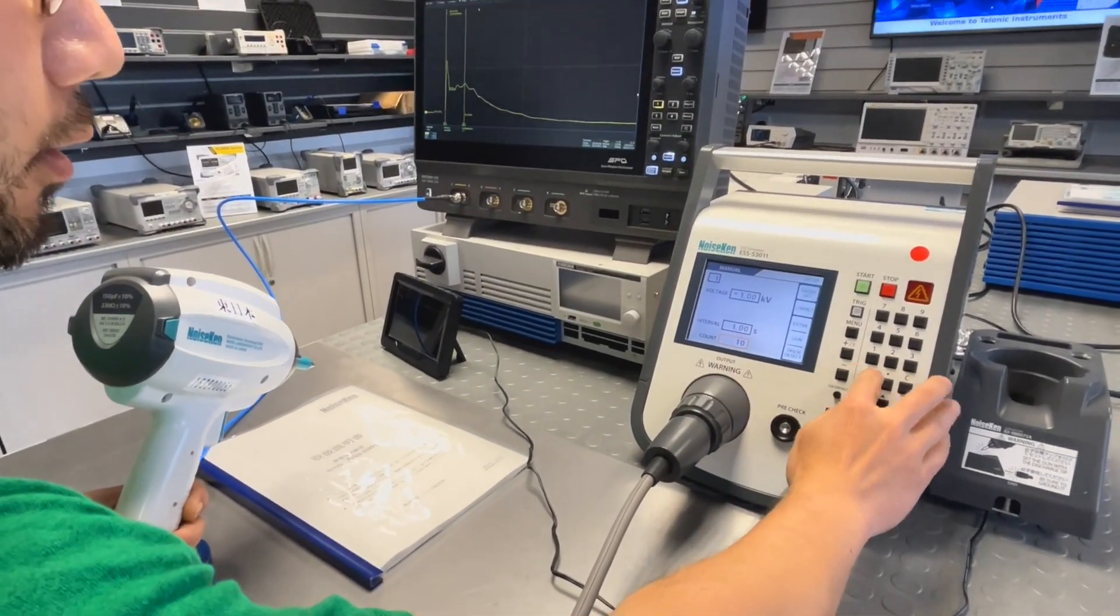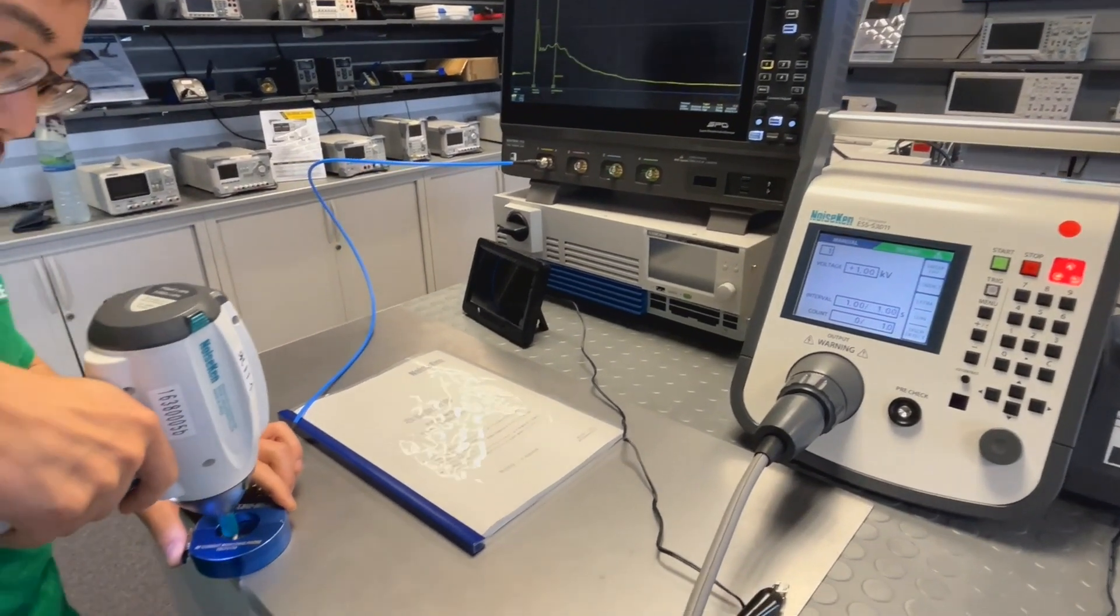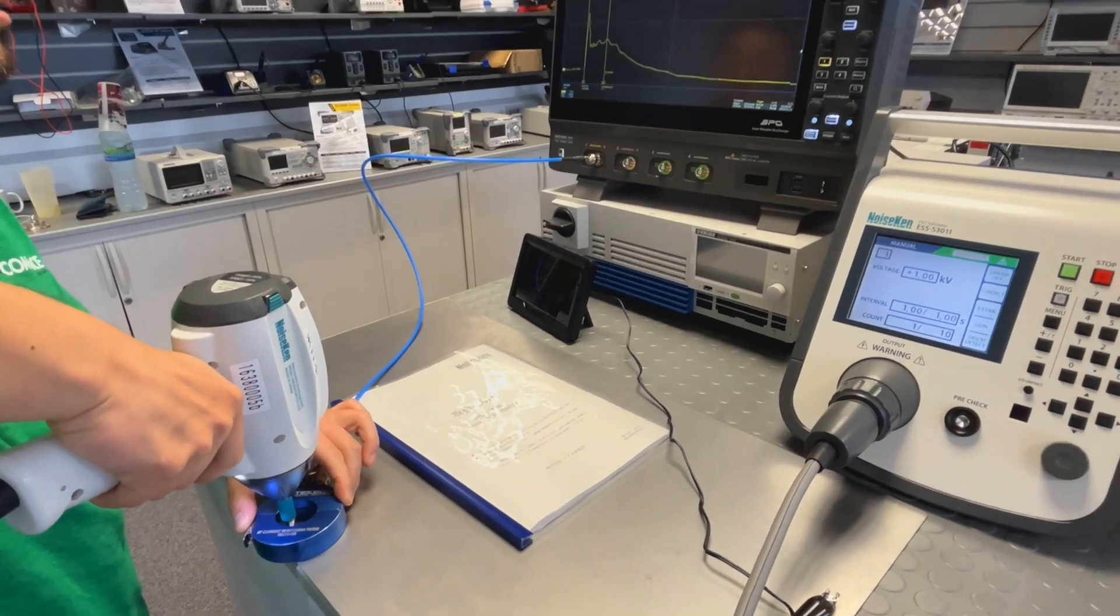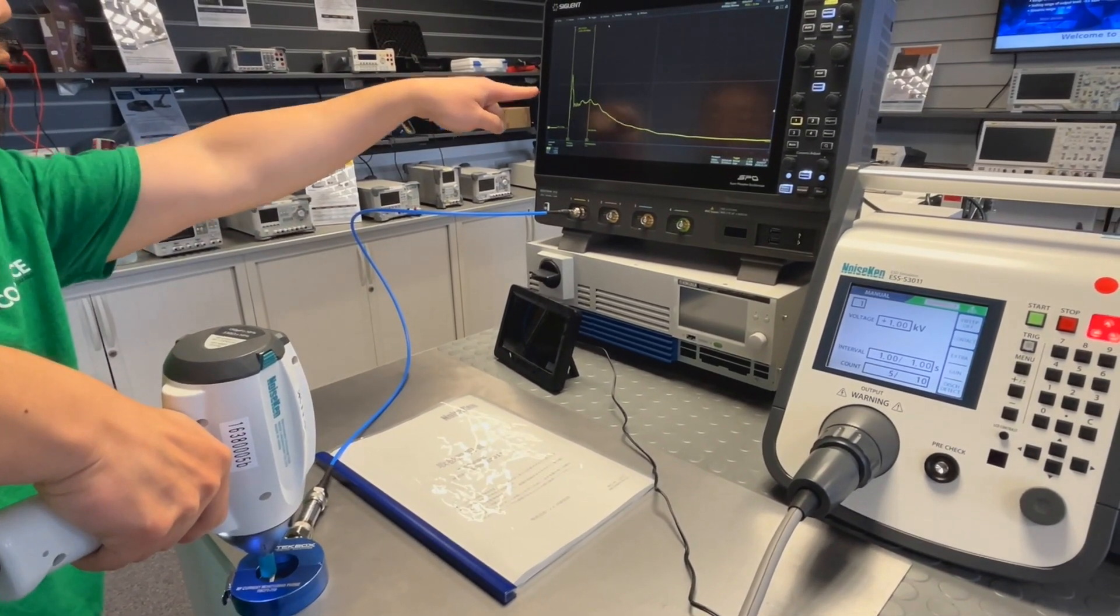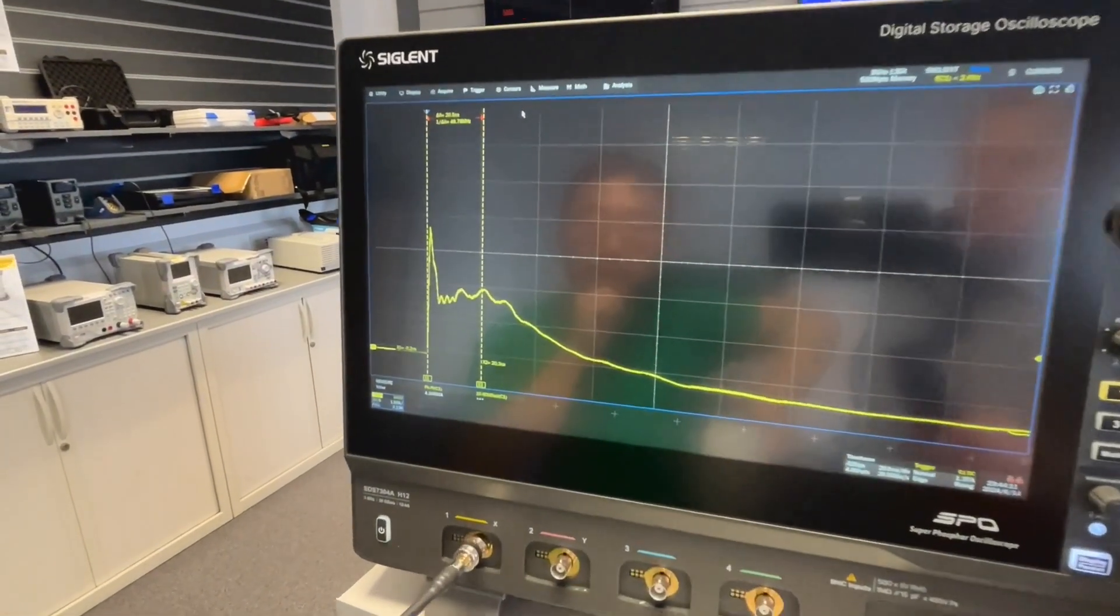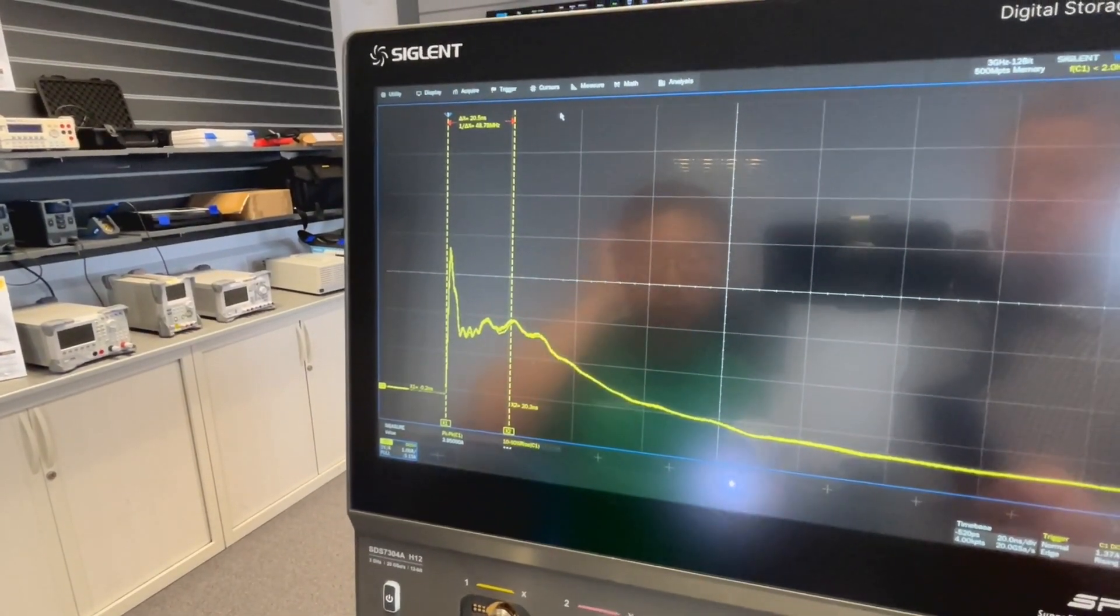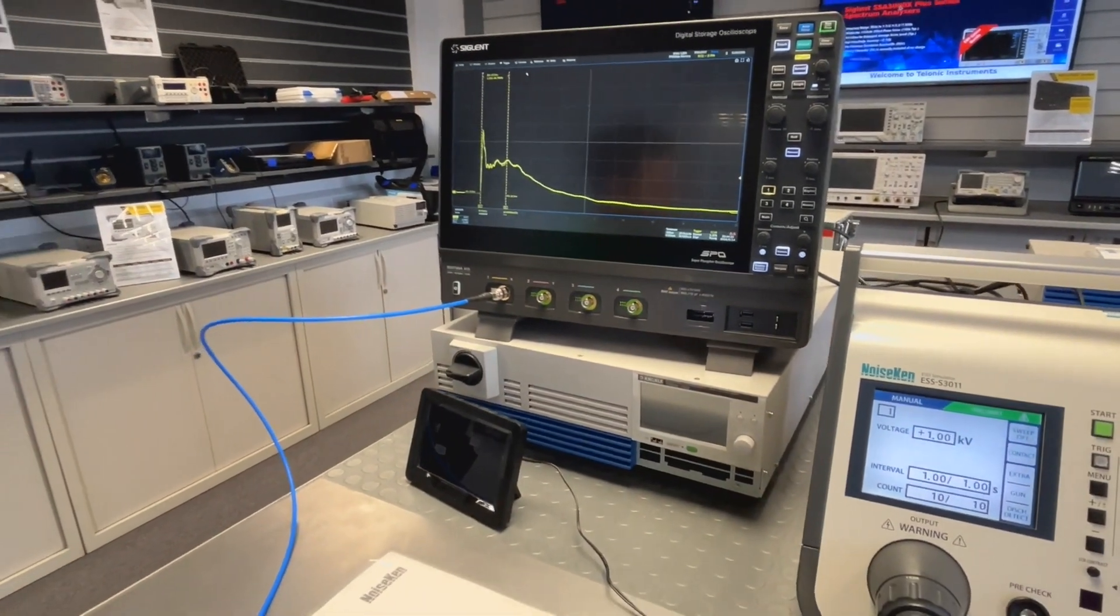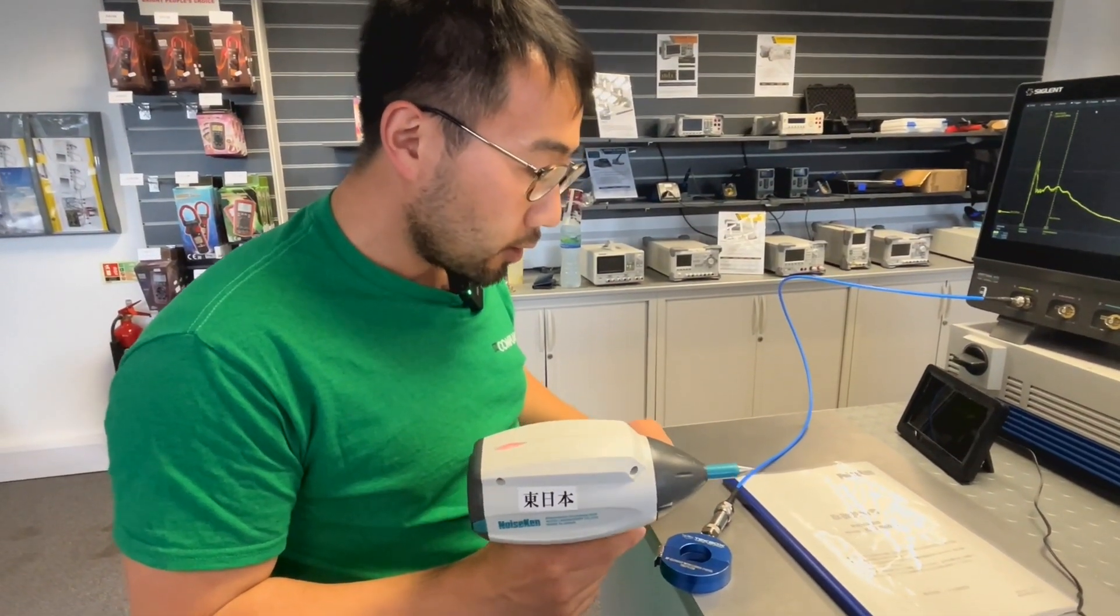Let's do 10 pulses. I can press one button and discharge 10 pulses and see the consistency. As you discharge, you can see the consistency is pretty good. That's 10 pulses and they are very consistent in terms of the rise time and the waveform. This is a good tip, this is a good gun in my opinion.